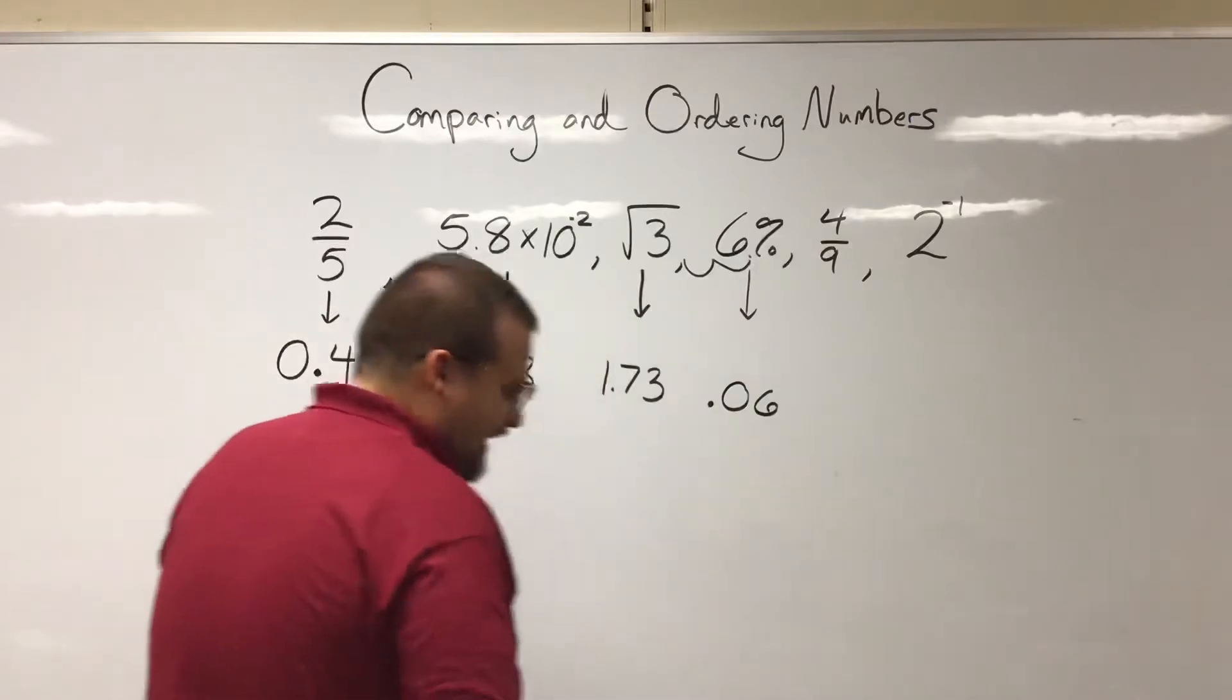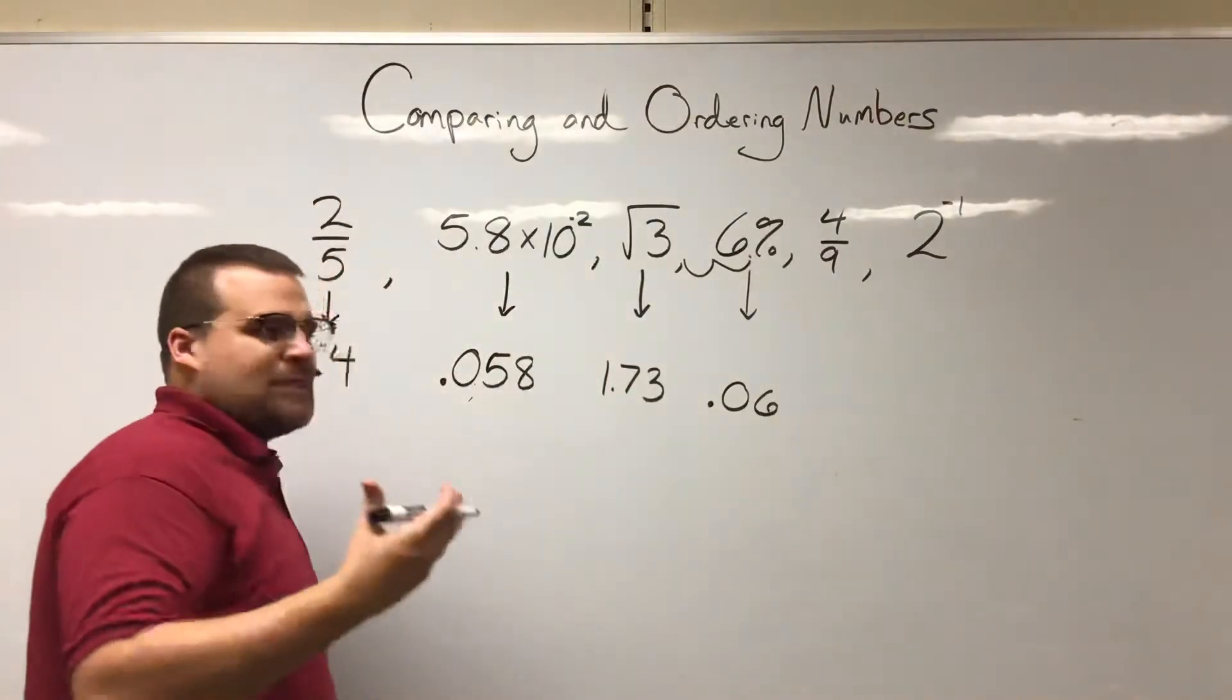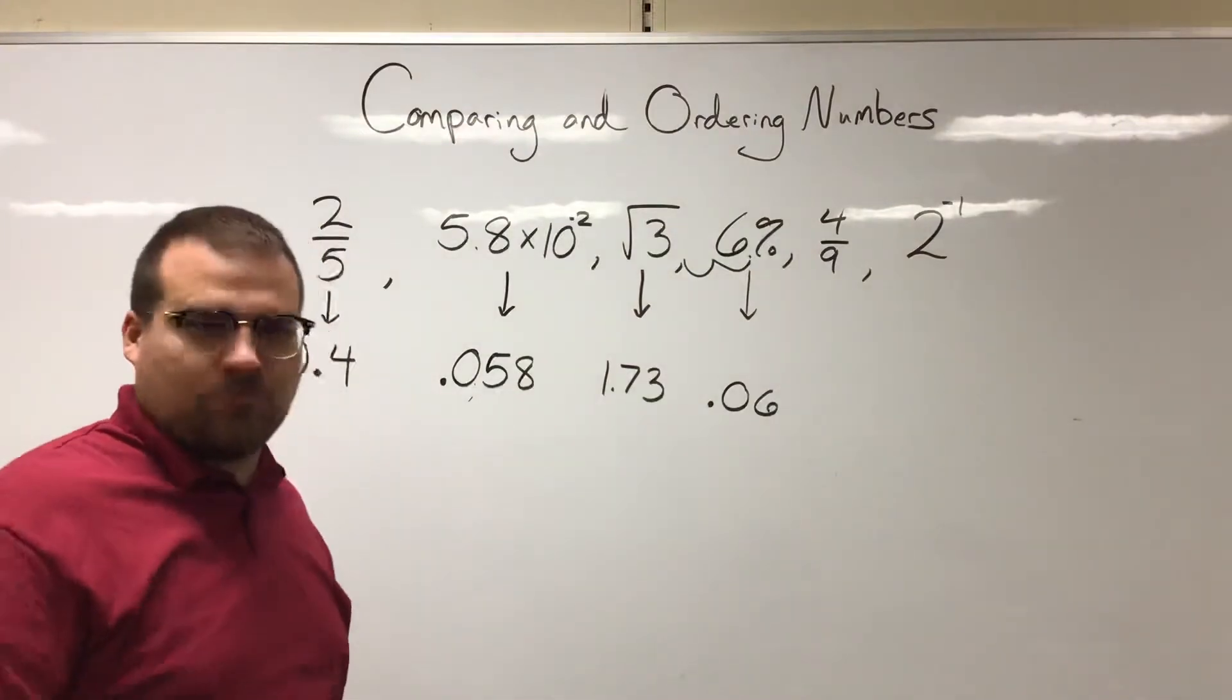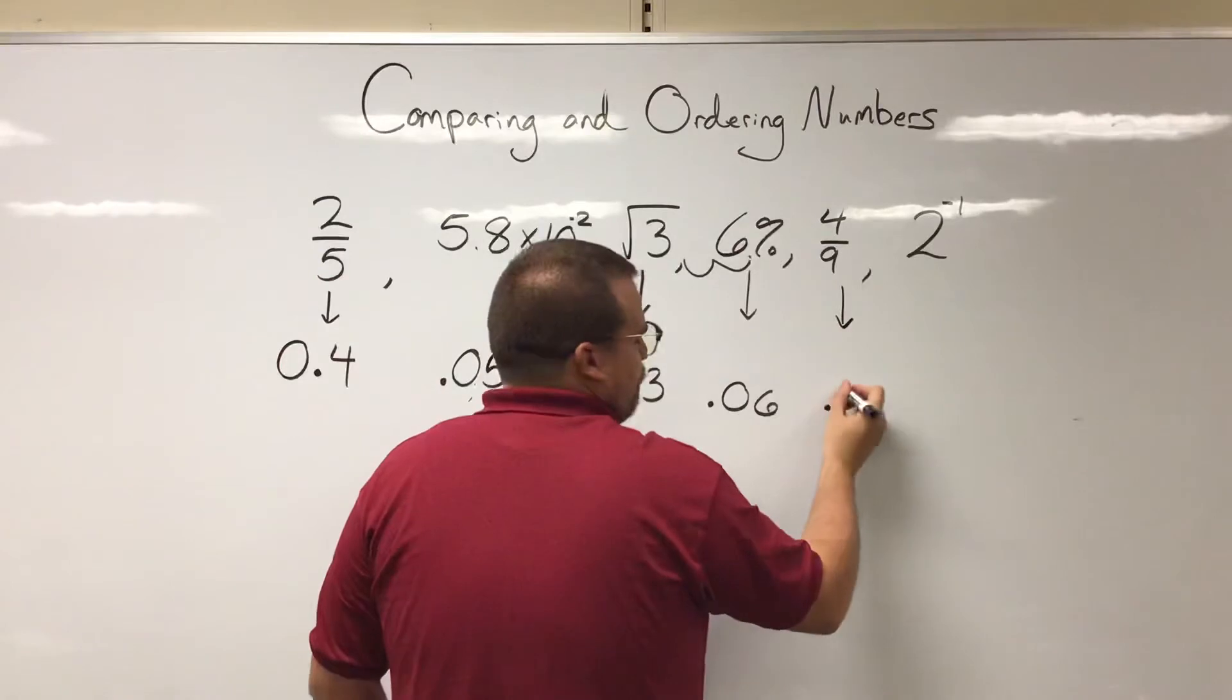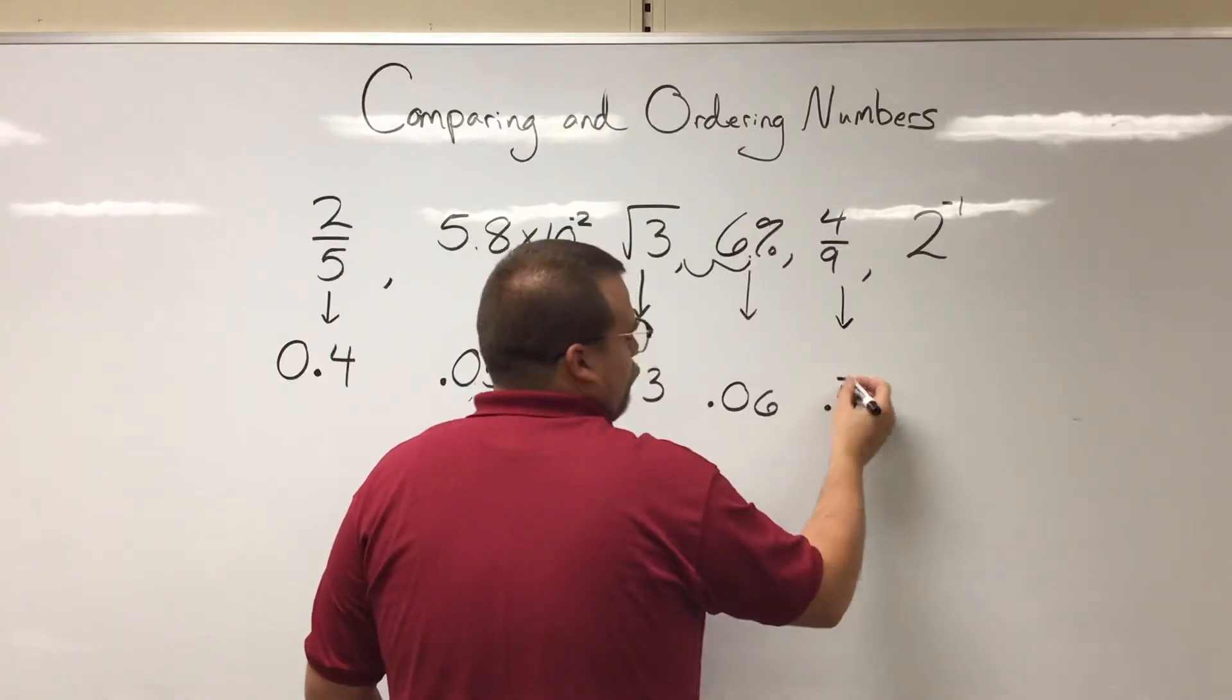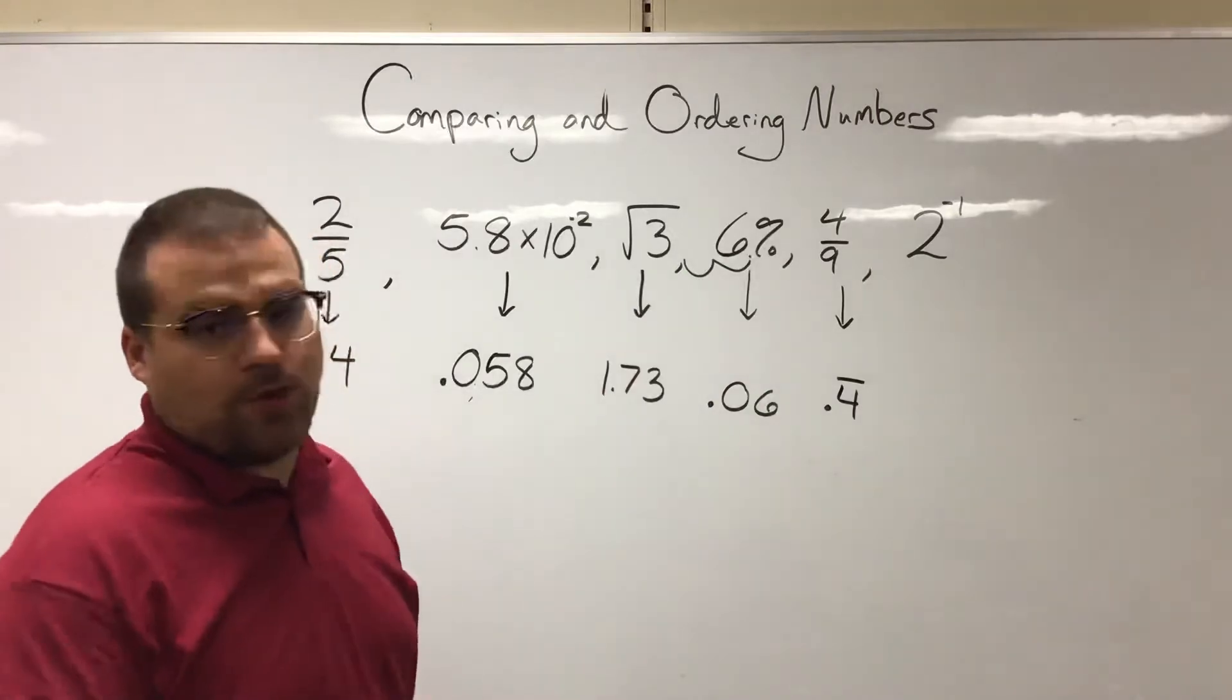Four over nine. Well, that's gonna turn into what? 0.44444 repeating. So I'll just write that as 0.4 with that line over it. That means the four just keeps on going forever.